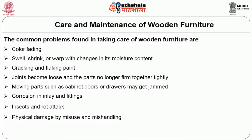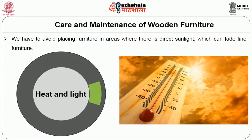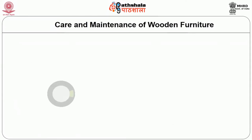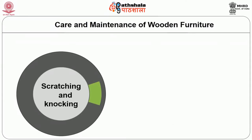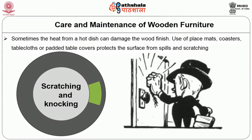We can prevent those problems by taking proper care. This includes avoidance of heat and light — avoid placing wooden furniture in areas with direct sunlight, which can fade fine wooden furniture. Avoid scratching and knocking of wooden furniture. The heat from hot dishes can damage the wood finish, so use placemats, coasters, tablecloths, or padded table covers to protect the surface from spills and scratching.